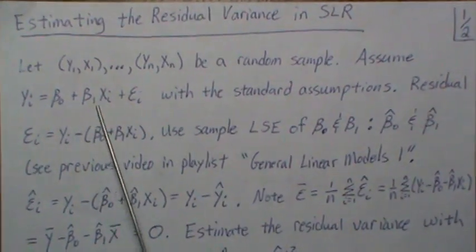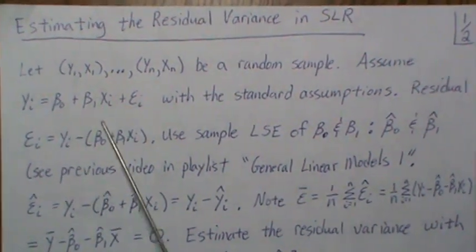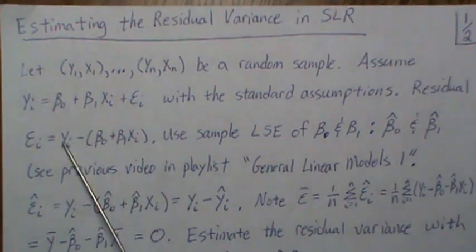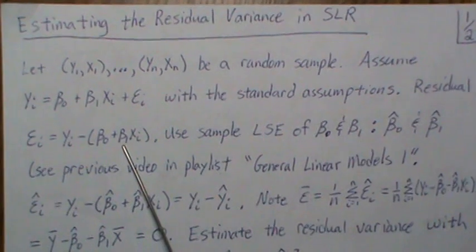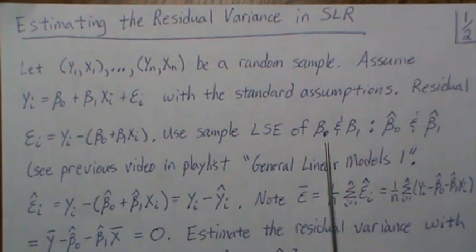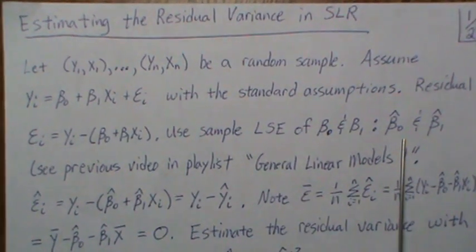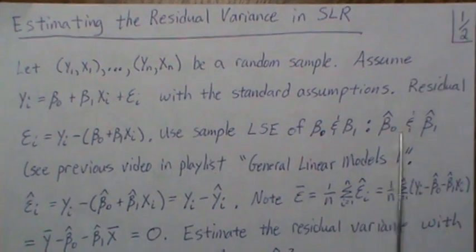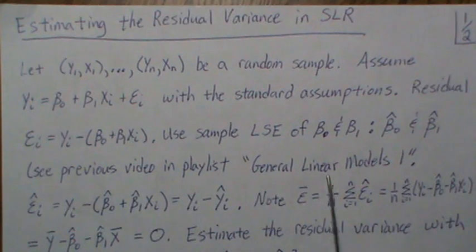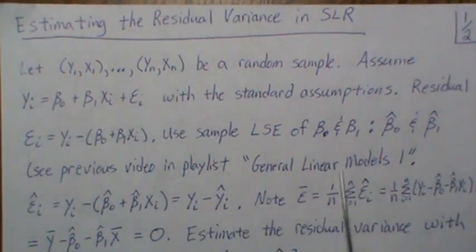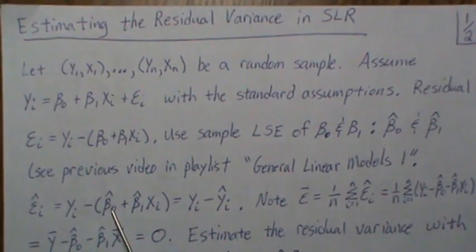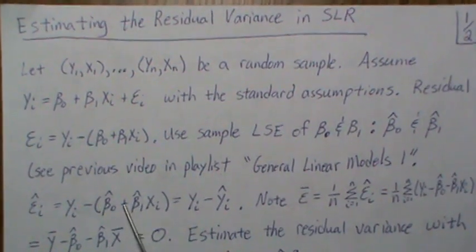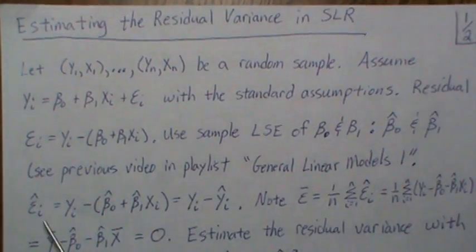The residual is the data point minus the line, and that's the fluctuation we're measuring. Since we don't know beta zero and beta one, we use the sample least squares estimates, beta zero hat and beta one hat — see a previous video in this playlist for their derivation. We call the estimated residual epsilon hat, and the regression line is generically represented as y hat, so the residual is the data minus the regression line.